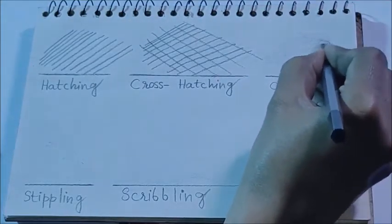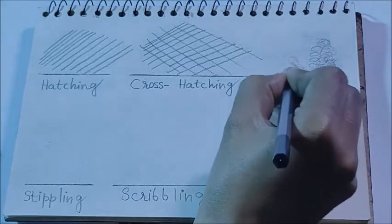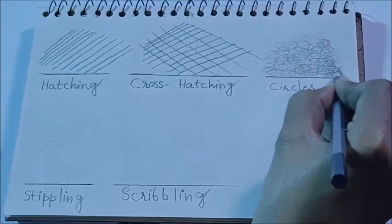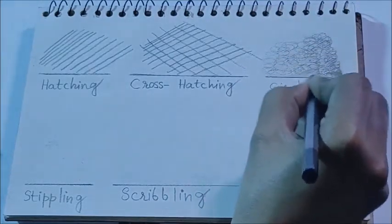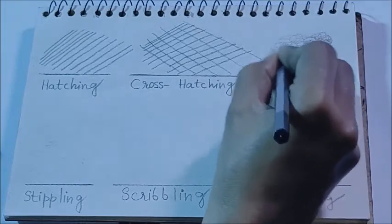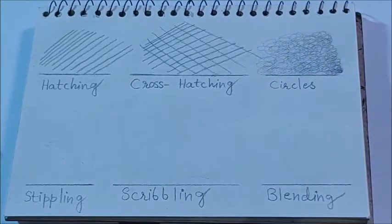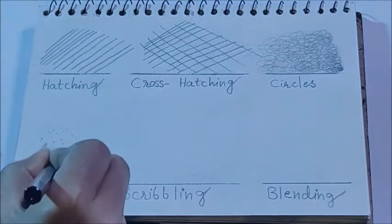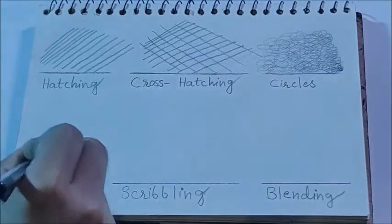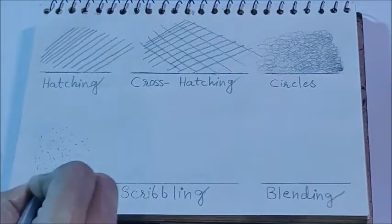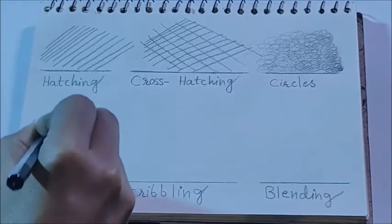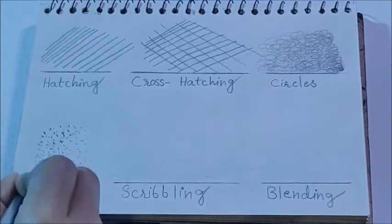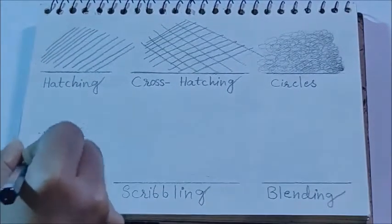In circles shading, shading is done through small circles. Keeping light and darks in mind, the number of circles is increased or decreased, which gives us dark, medium, and light effects in the shading. In stippling, small dots are used to create light and darks — more dots make shading darker, and fewer dots with more gap make the shading appear lighter.